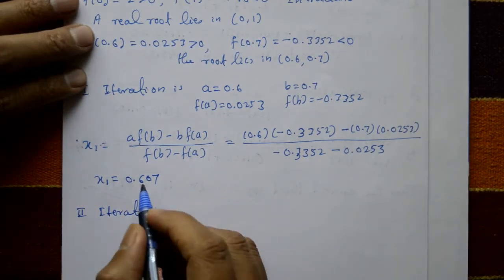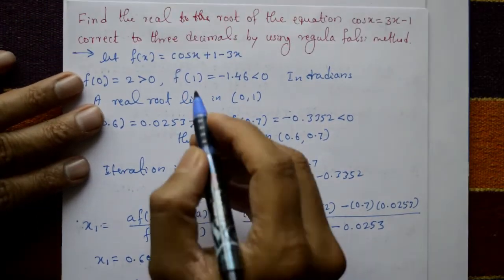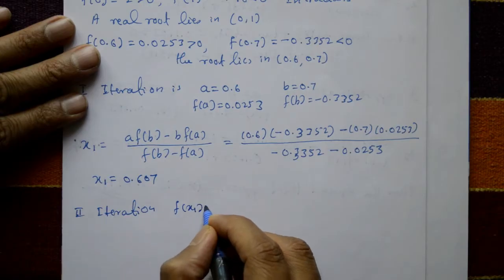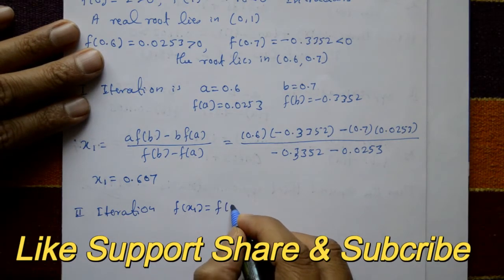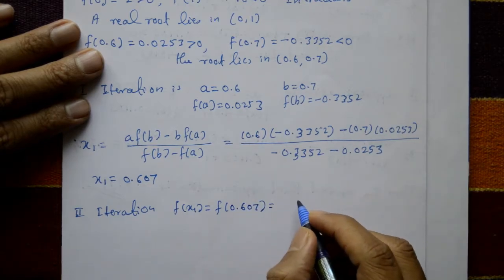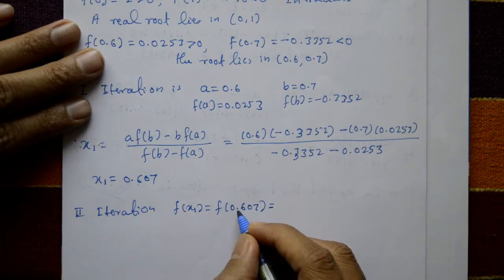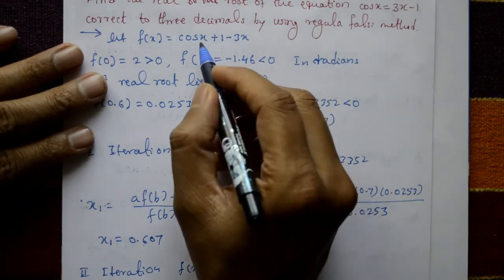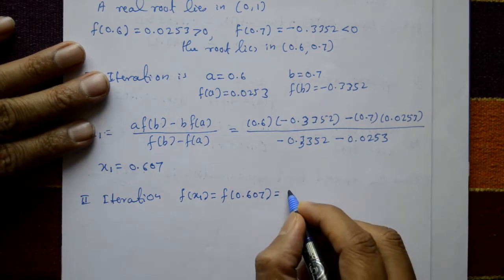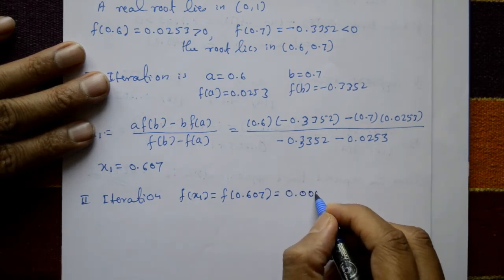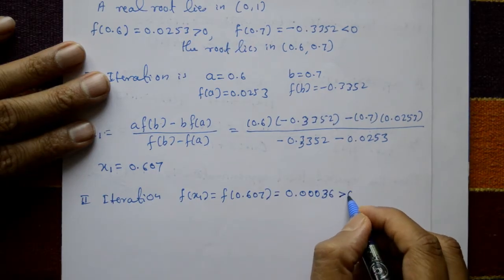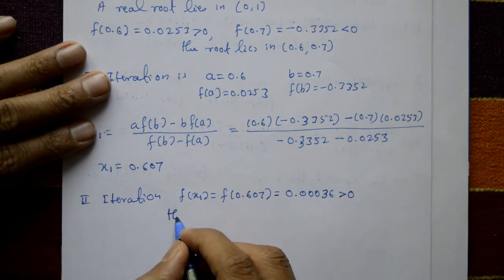For the second iteration, take x1 = 0.607 and substitute into f(x). f(0.607) = 0.00036, which is positive, greater than 0.